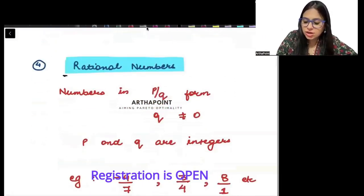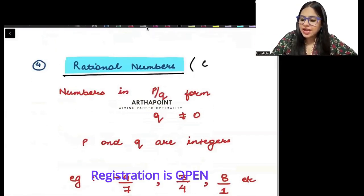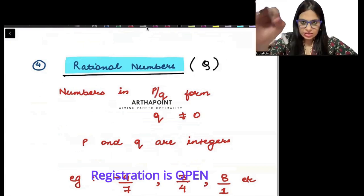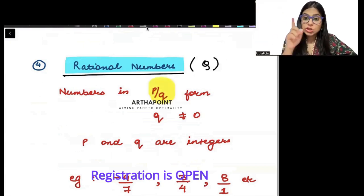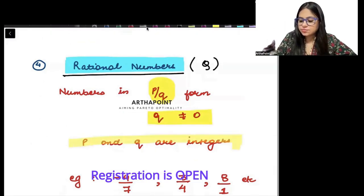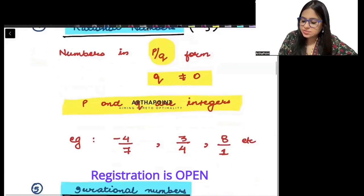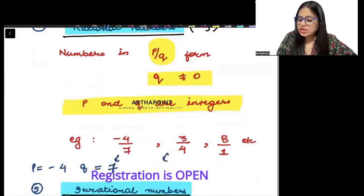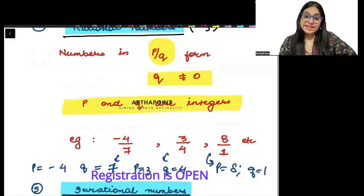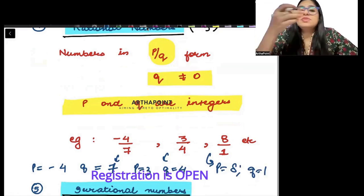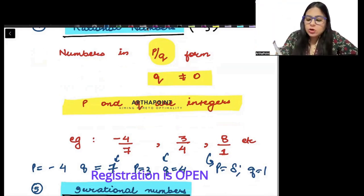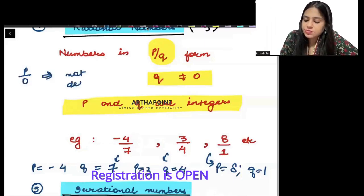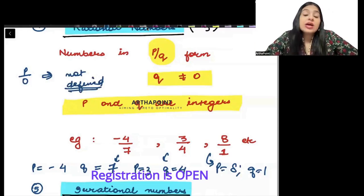Then we have rational numbers. Rational numbers are represented by Q. A rational number is anything in P by Q form, where Q is not equal to 0. P and Q can be any integers, negative or positive. For example, P is minus 4 and Q is 7; or P is 3 and Q is 4; or P is 8 and Q is 1. Remember, Q cannot be 0 because anything divided by 0 is not defined.